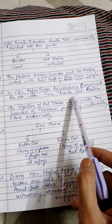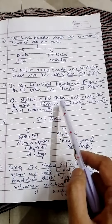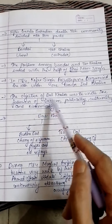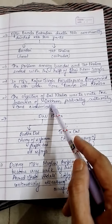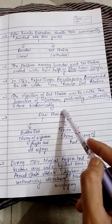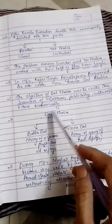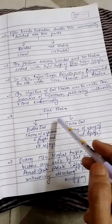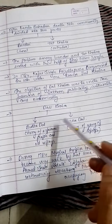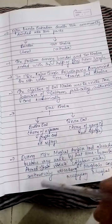After this division, a unified force called Dal Khalsa was formed. The objective of Dal Khalsa was to unite followers politically, culturally, and economically. Dal Khalsa was further divided into two groups: the Buddha Dal and the Tarun Dal.